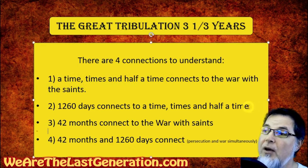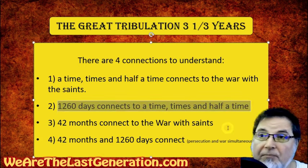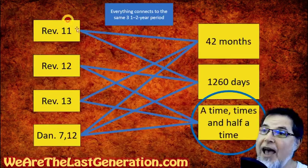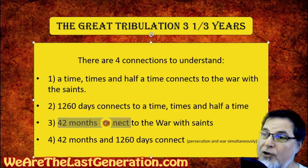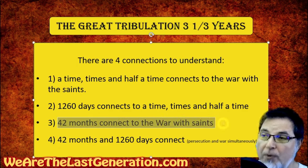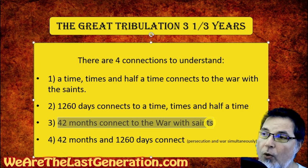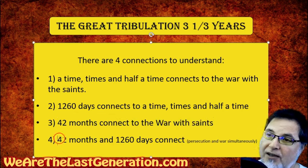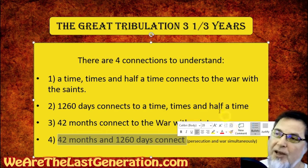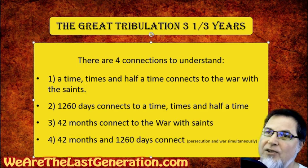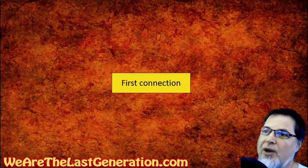Connection two: I have to connect 1260 days to a time, times, and half a time. Connection three: connect 42 months to the war with the saints — how does 42 months connect with the war? Connection four: connect 42 months and 1260 days together. These are the steps I needed to take so that this chart makes sense.